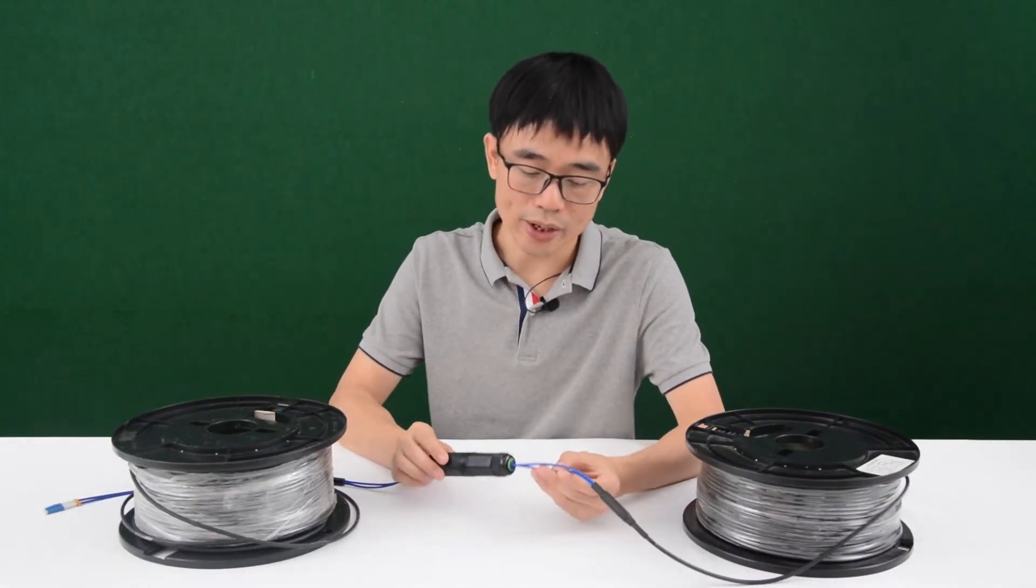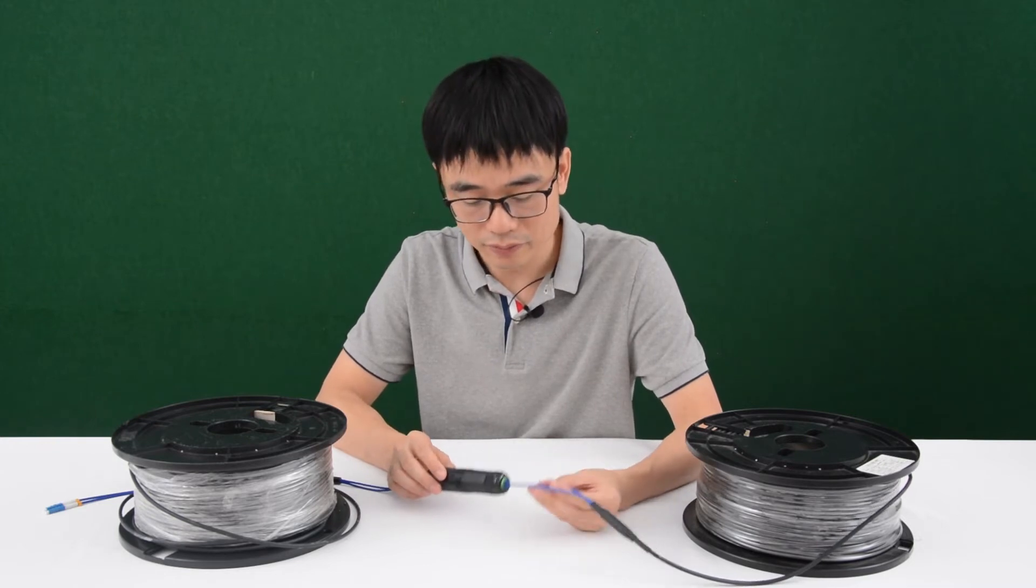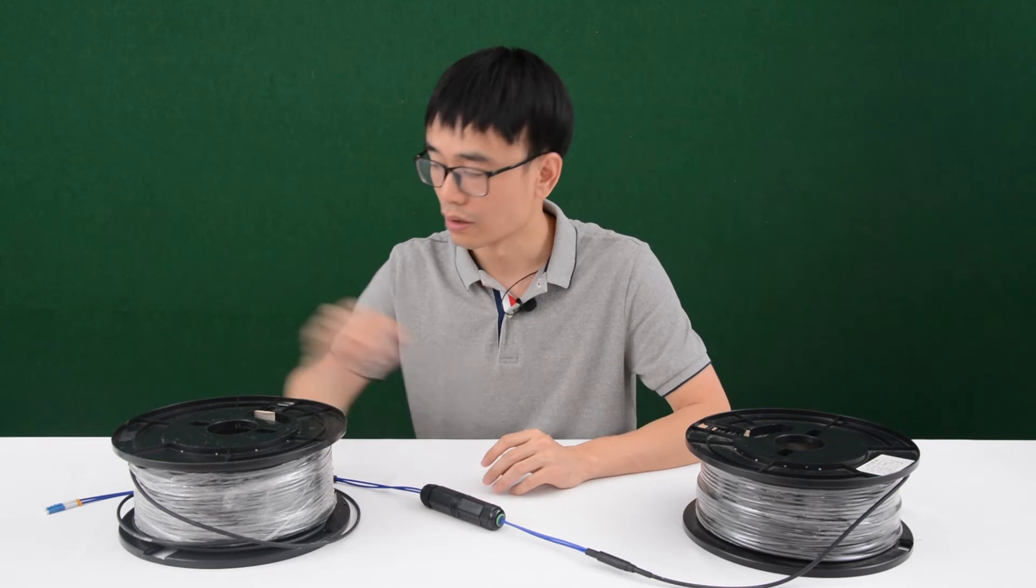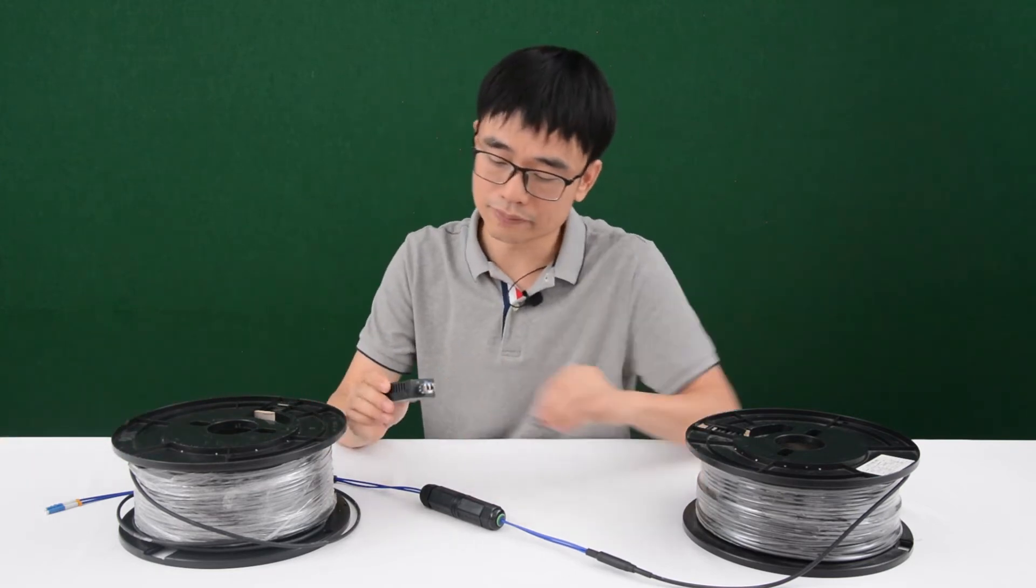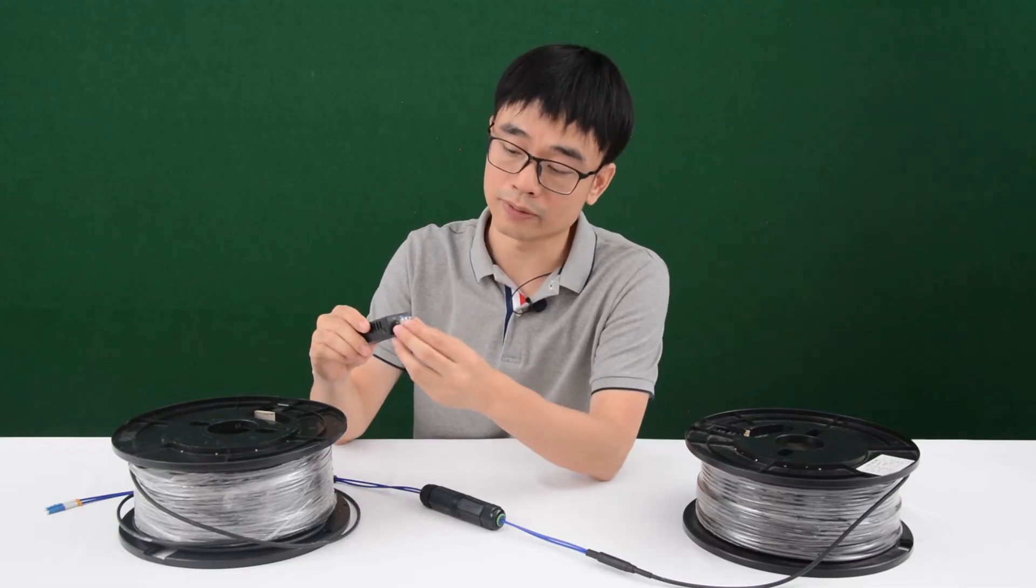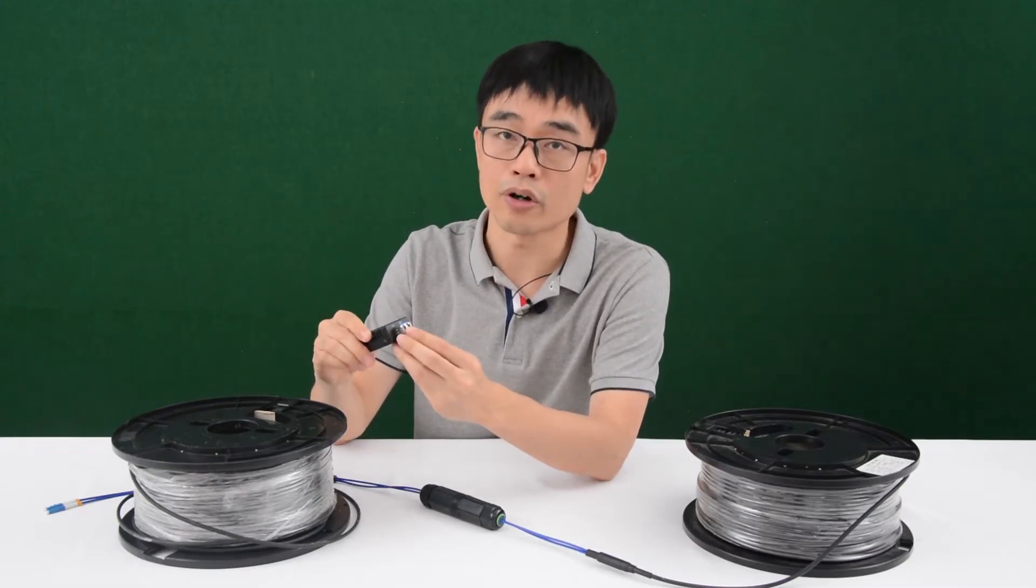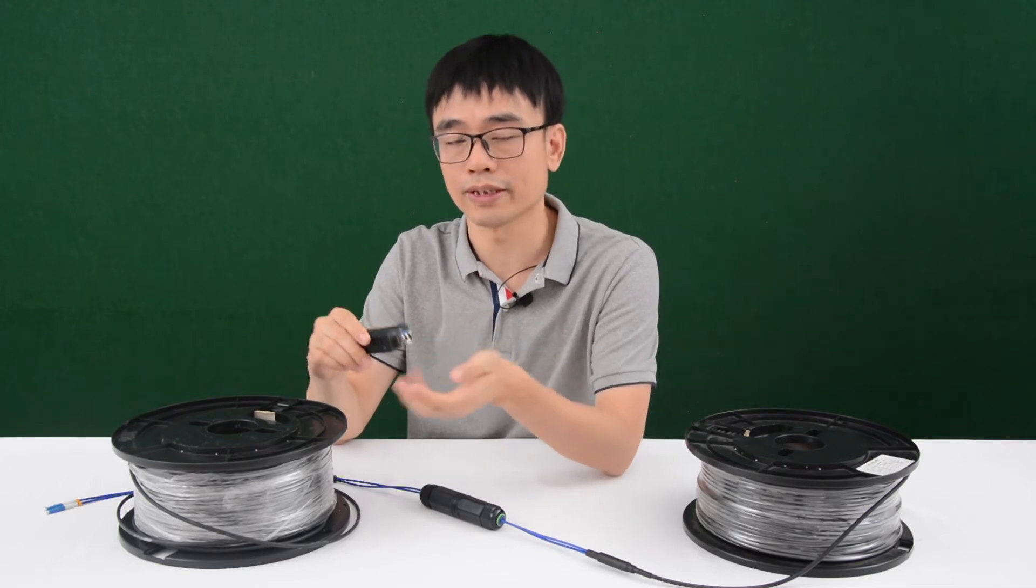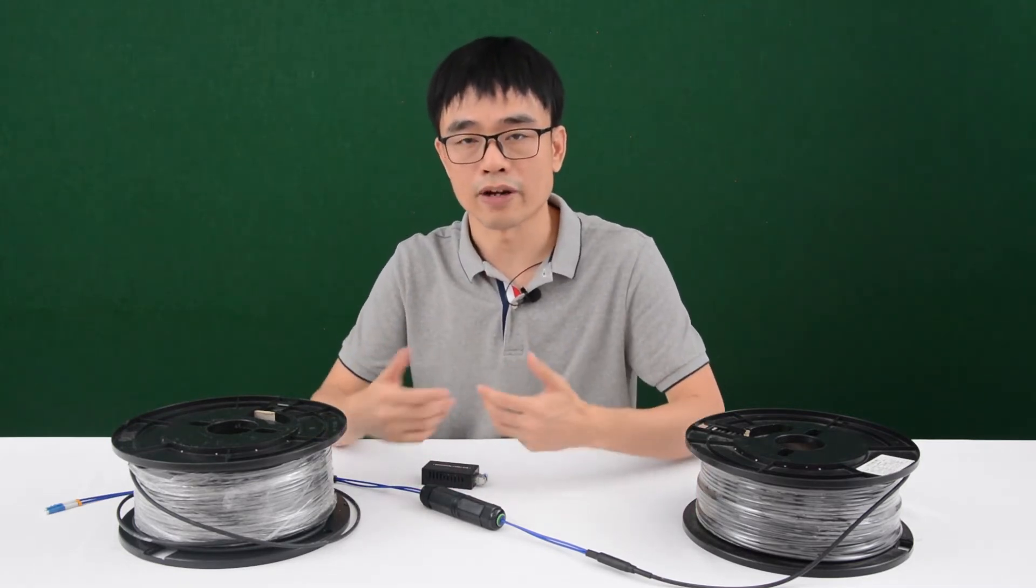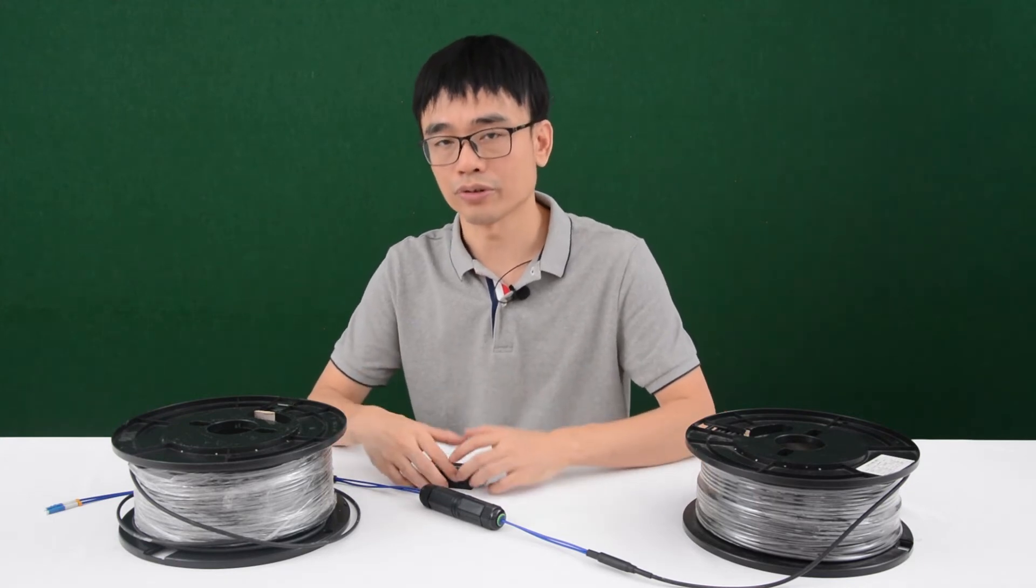This is the two-strand pre-made fiber optic cable. Usually, we need two strands to transmit and receive the data. Here, we have the media converter. This is the SFP transceiver. We got two ports. It's supposed to connect two fiber optic cables to these two ports. One for transmitting, one for receiving.